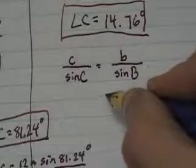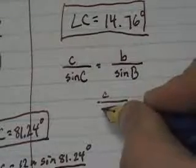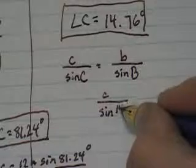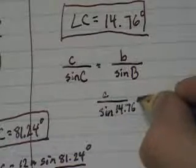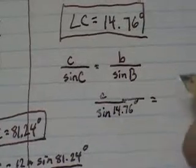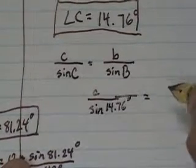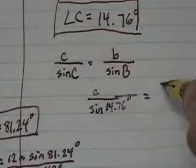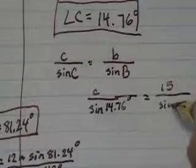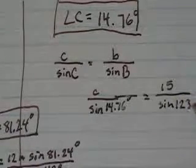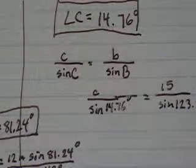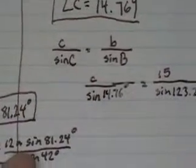So plug in my numbers. What is angle C? It is 14.76 and that equals B, which is 15, over sine of 123.24 degrees.